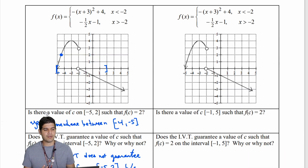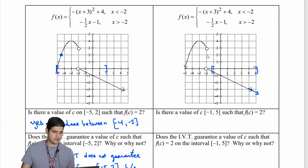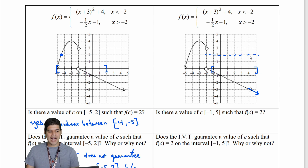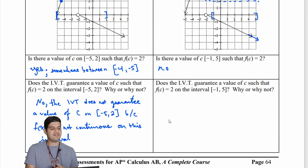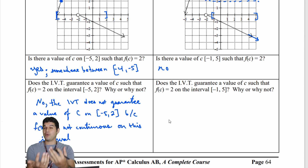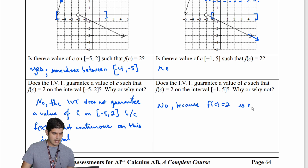Now let's look at the same problem but change the interval. Is there a value of c between negative 1 and 5 such that f of c equals 2? There isn't even a value between negative 1 and positive 5 where the y-value comes out to be 2, so the answer to the first question is no. The IVT does not guarantee a value of c between negative 1 and 5 such that f of c equals 2.